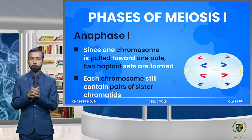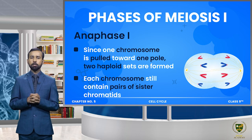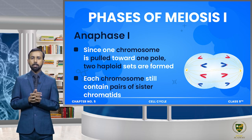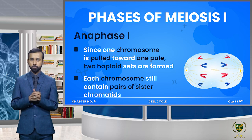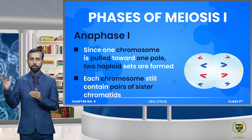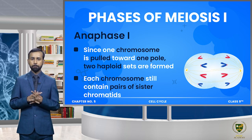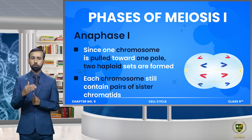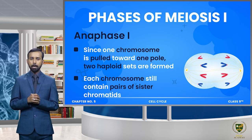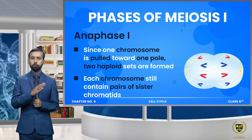Anaphase 1 میں pulling force exert ہوتی ہے تو وہ پورے کے پورے chromosomes کو اپنے اپنے respective poles کی طرف لے جاتی ہے۔ Chromosome number جو ہے وہ double ہو کر 92 ہو جاتا ہے - اب half chromosomes دونوں side کے centrosomes پہ پہنچ چکے ہیں یعنی 46 chromosomes ایک side پہ اور 46 دوسری side پہ۔ 92 جو تھا وہ complete تھا، اب دونوں sides پہ 46 46 رہ گیا تو اس کو ہم کہتے ہیں کہ chromosome number half ہو چکا۔